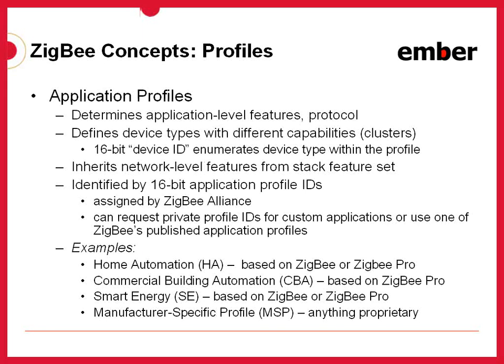Envision that you have some kind of application profile — suppose it's home automation. Home automation says there are a number of devices that can be in a home automation network, and each of these devices is effectively given its own unique ID. Those devices each have their own capabilities as far as what they can do, what kind of properties they have, and what kind of messages they send and receive. And that's really what the profile is defining: the behavior of those different device specifications.